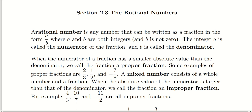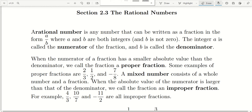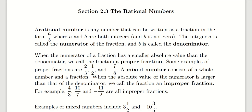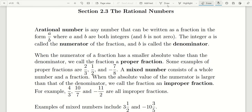Hi, everyone. In section 2.3, we're going to cover the rational numbers, which some of you might know better as fractions. A rational number is any number that can be written as a fraction in the integer form A over B, where A and B are both integers. And as we saw in the last section, we know we can't divide by 0, so B cannot be 0. The top part of our fraction is referred to as the numerator, and the bottom number is referred to as the denominator.